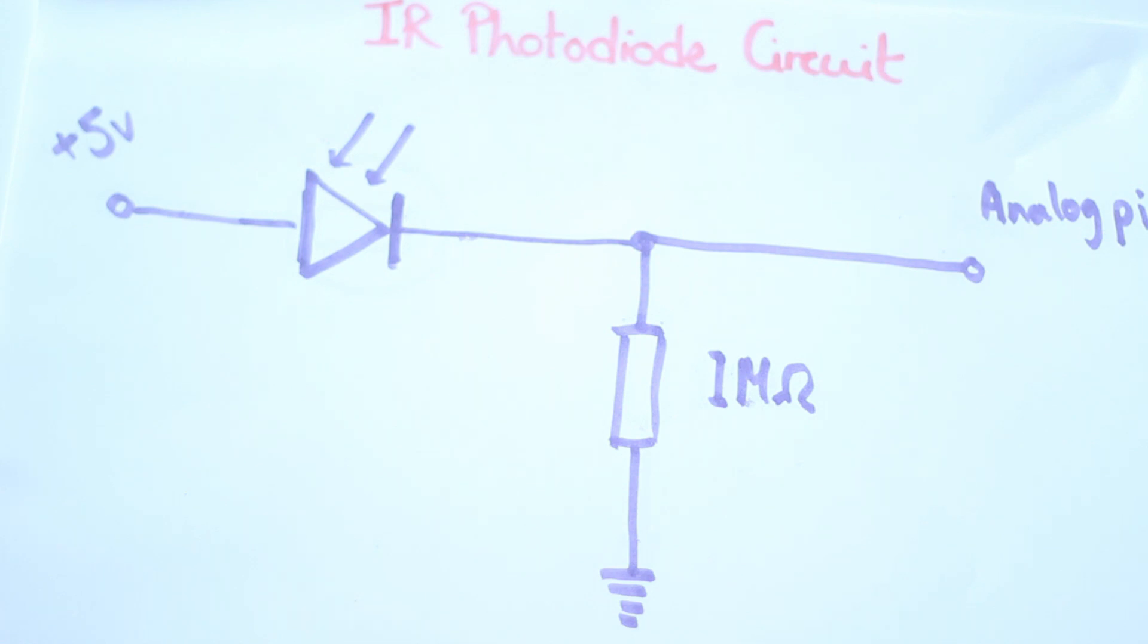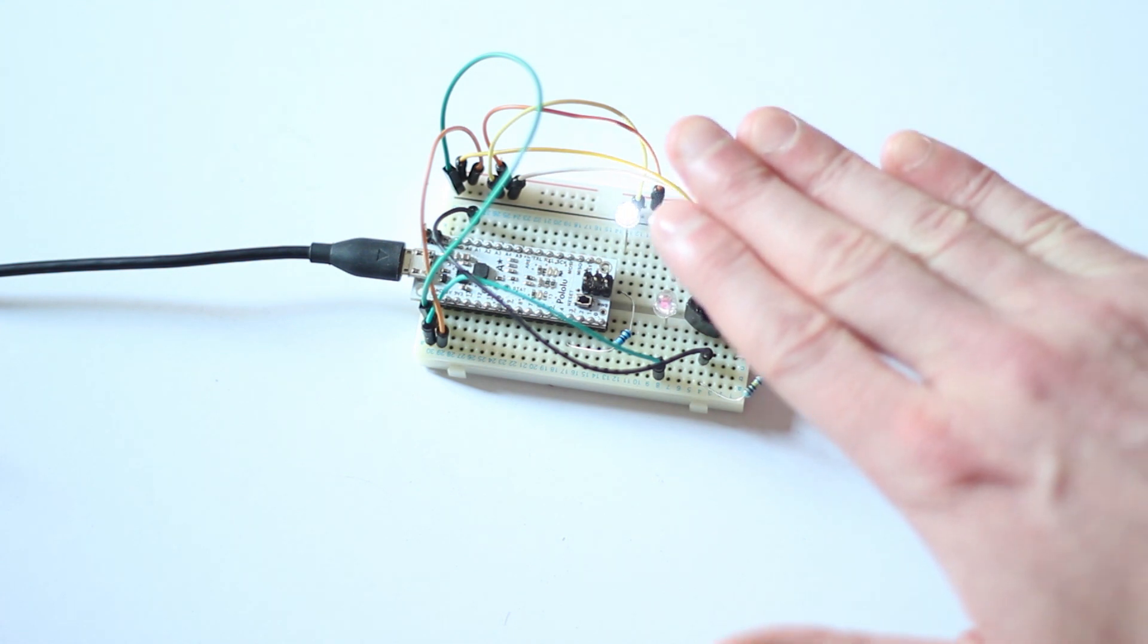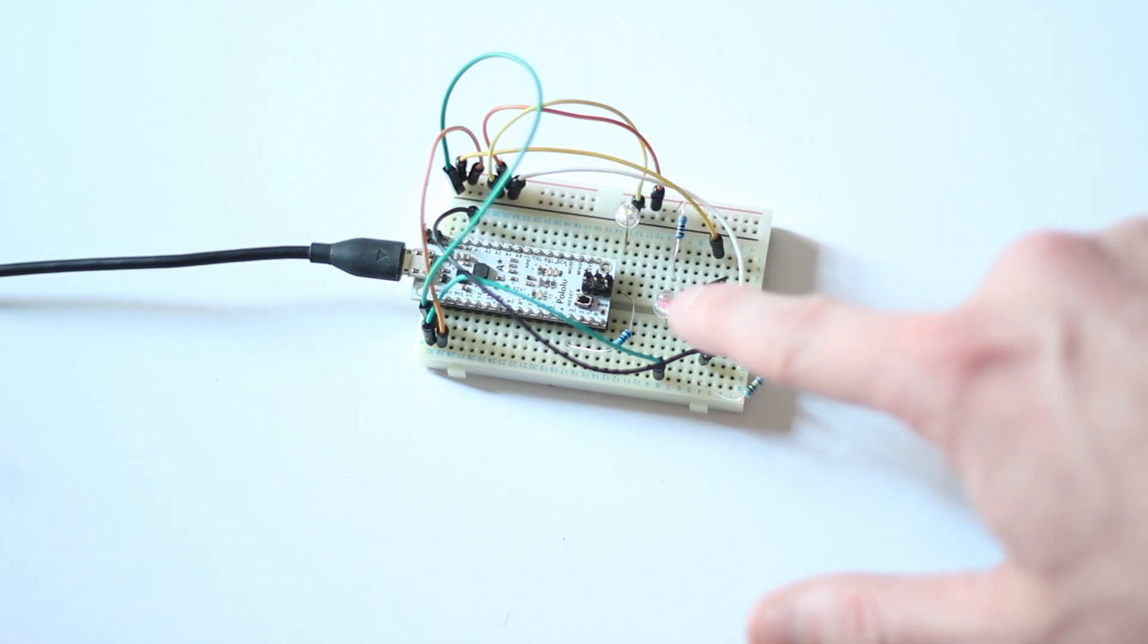And then we're feeding directly into the analog pin and that gives us this ability to change those analog values just by reflecting a bit more of this infrared onto the photodiode.